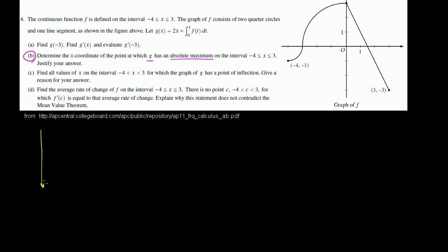Let's think about it in general terms — where a general function could have an absolute maximum over an interval. Let me draw some axes. And then we can go back to our function g, which is derived from f. Let's say these are my coordinate axes and we care about some interval here.